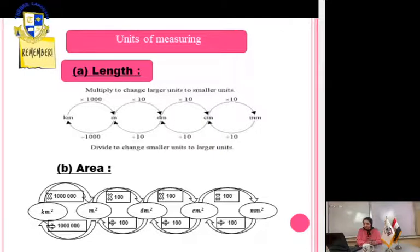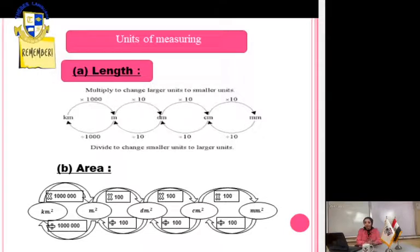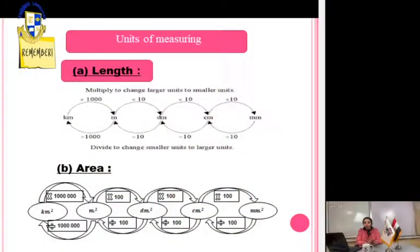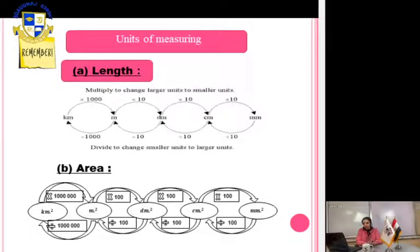As before: bigger to smaller unit — multiply; smaller to bigger — divide. For area units, we double the zeros. So 1000 becomes 1 million, and 10 becomes 100. From kilometer² to meter²: multiply by 1 million. All other area conversions multiply by 100.